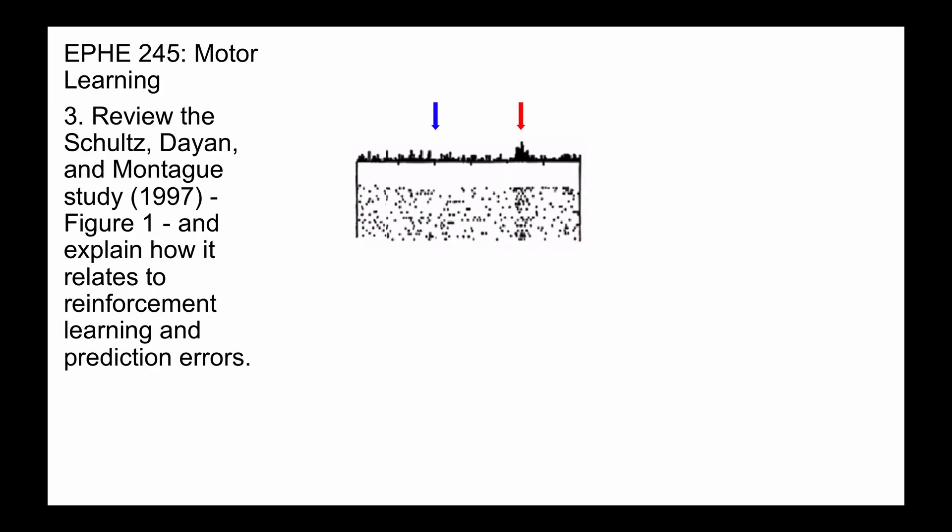What they found was in the early stages of learning, the reward, or the outcome, resulted in an increased firing rate of dopamine neurons, something we've already talked about in previous videos.